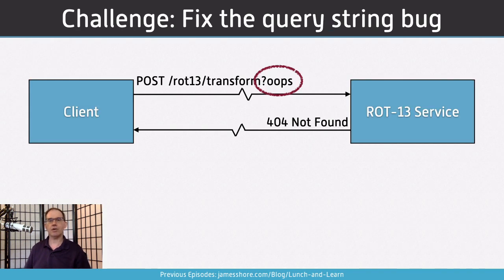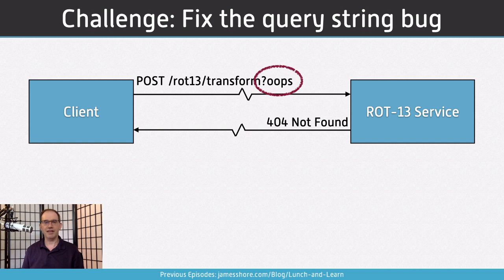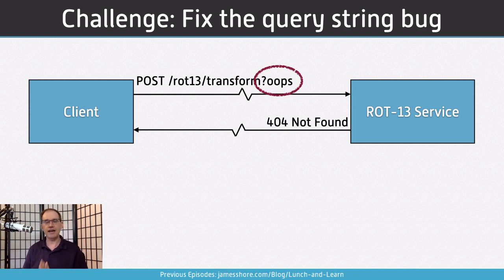Specifically, the challenge we're working on today is continuing to work on our Route 13 microservice developed in previous episodes, which you can find at jamesshore.com/blog/lunch-and-learn. It turns out — and this is a real error I made without realizing it — if you post to the microservice with a query on the URL, then the service cannot find the URL. So there's a bug. How do we fix that and how do we do it in a way that really enhances long-term quality?